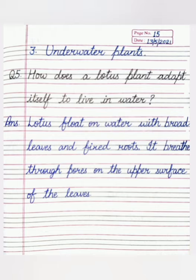Our next question is: how does a lotus plant adapt itself to live in water? Lotus plant apne aap ko water mein rehne ke liye adapt kaise karta hai? Us mein kya special features hote hain? Lotus plants float on the water with broad leaves and fixed roots. It breathes through the pores on the upper surface of the leaves. Other plants breathe from the lower surface, but the lotus plant's lower surface is covered by water, so it breathes from the upper surface.